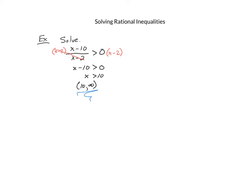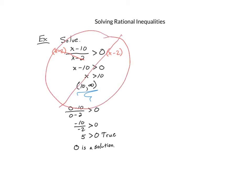If I plug 0 in, it shouldn't make the inequality true. We have 0 minus 10 over 0 minus 2, testing if it's greater than 0. That gives negative 10 over negative 2, which is 5 — and 5 is greater than 0, which is true. That means 0 is actually a solution to the inequality, but it's not listed in our interval. So something is wrong.